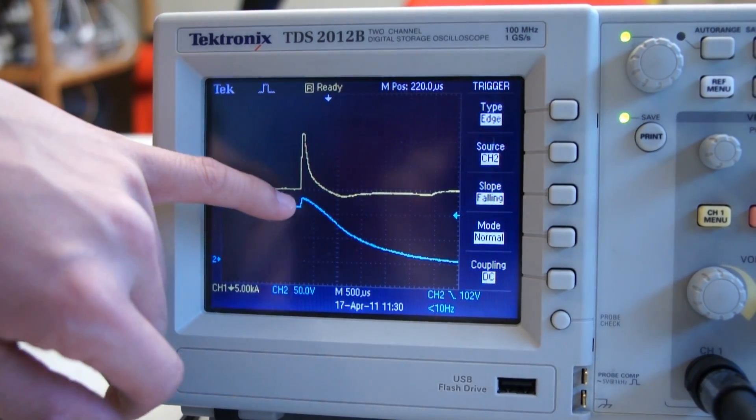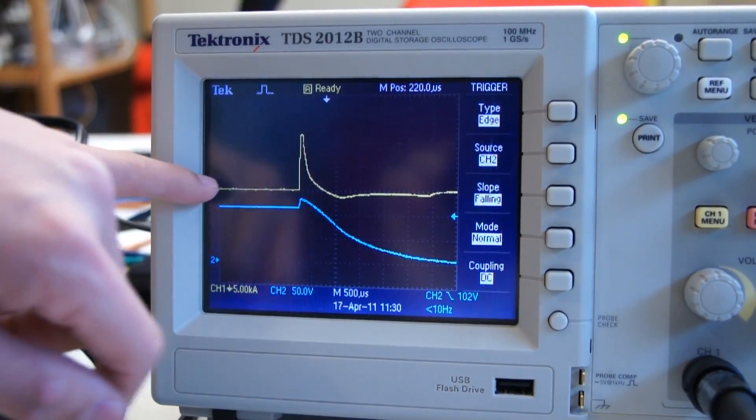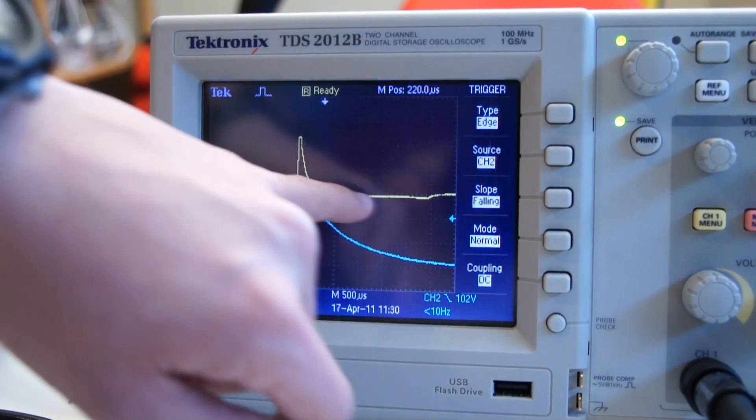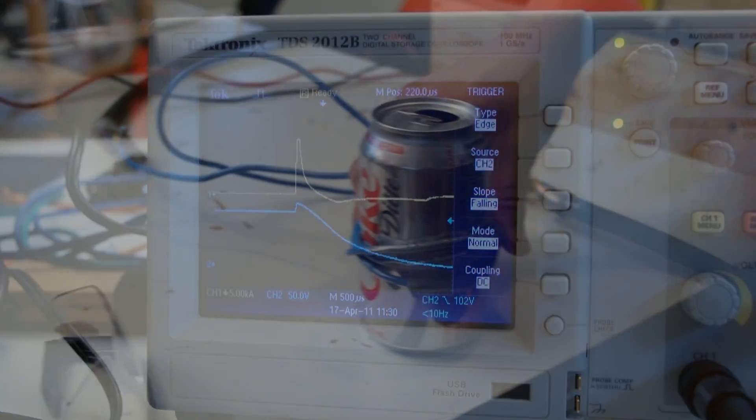Now you can see the voltage waveform as it drops towards zero volts and the current waveform spike and drop down. You can see the slight ringing.